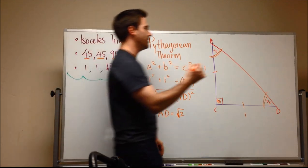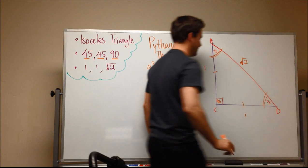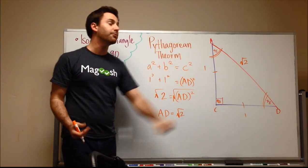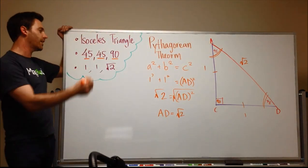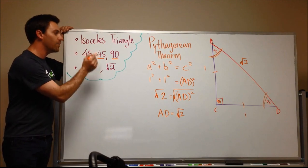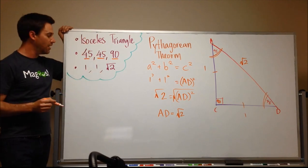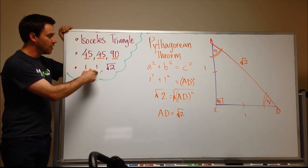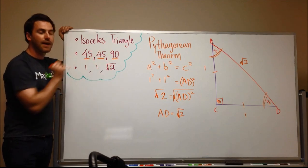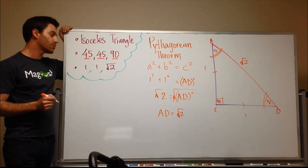Good. Awesome. So now we know this side. And so another thing that we know about an isosceles triangle that is a 45-45-90 degree triangle is that the two sides potentially could equal one and then the hypotenuse is square root two.